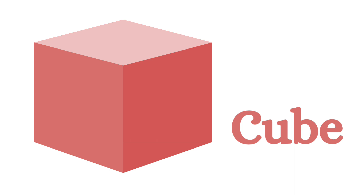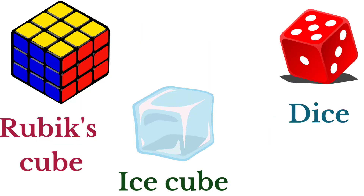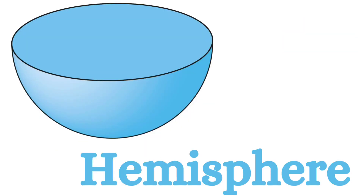Next shape is cube. This is the shape of a cube. Let us see some few examples for the shape of cube which we see daily: Rubik's cube, ice cube, dice. These shapes look like a cube.